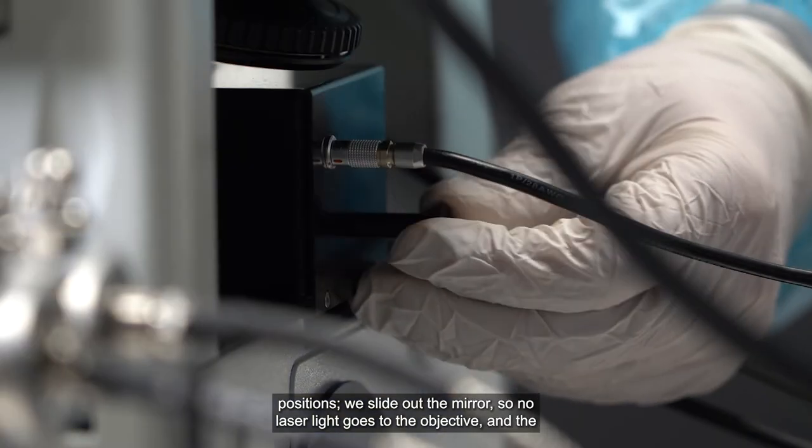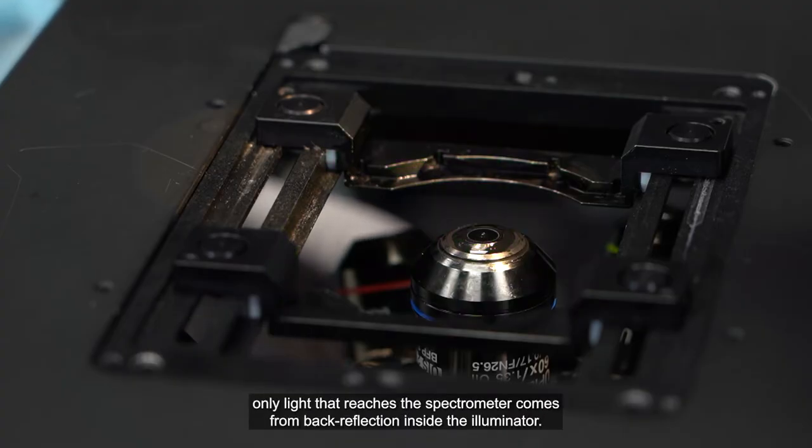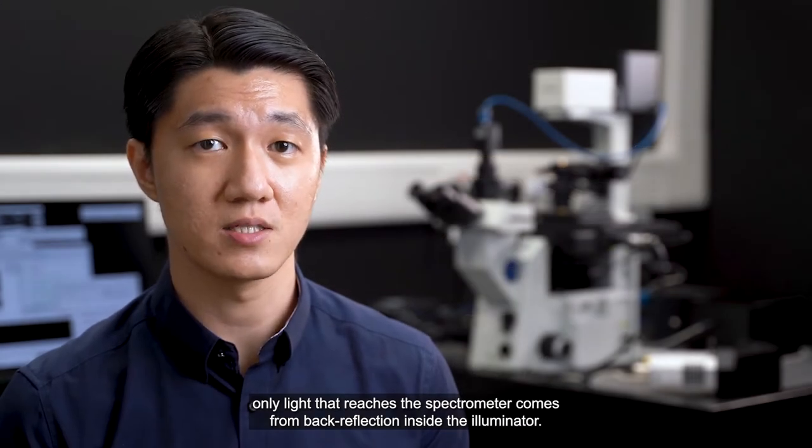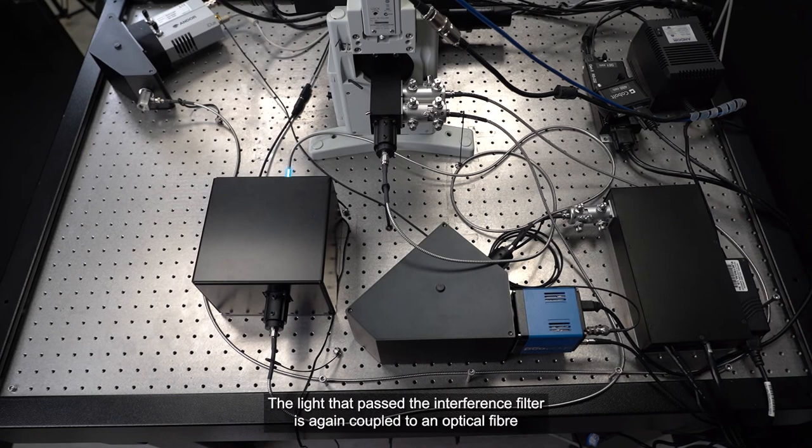We slide out the mirror, so no light goes to the objective, and the only light that reaches the spectrometer comes from back-reflection inside the illuminator. The light that passes the interference filter is again coupled to an optical fiber, and delivered to a Brillouin spectrometer based on VIPA.